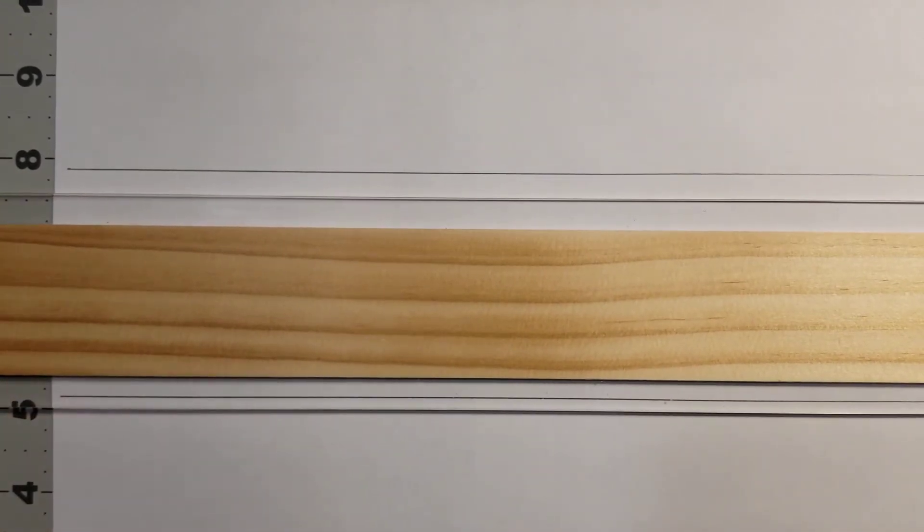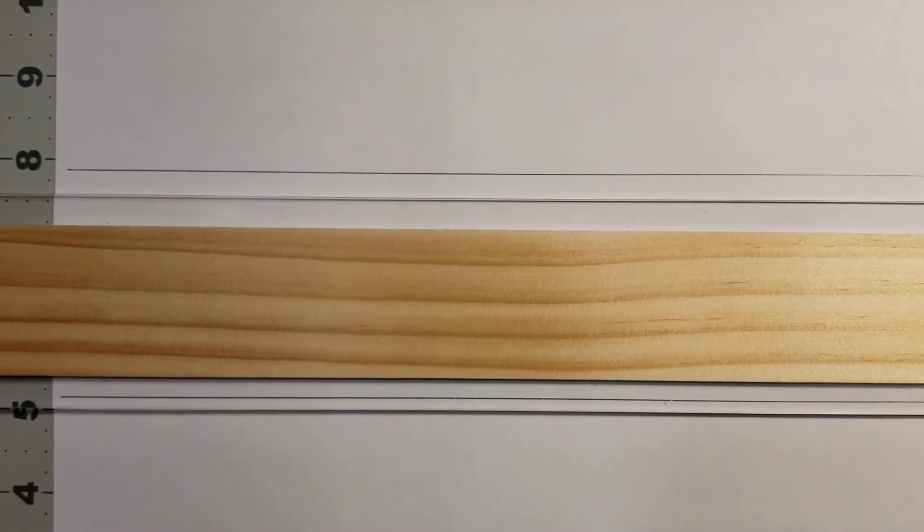What is an object line? An object line is the line that shows you the boundaries of an object, kind of the outside edges, sometimes inside edges.